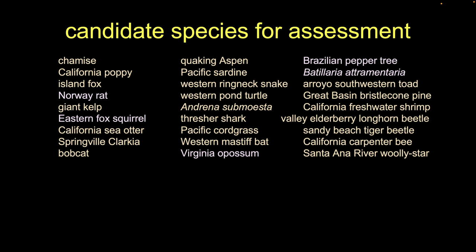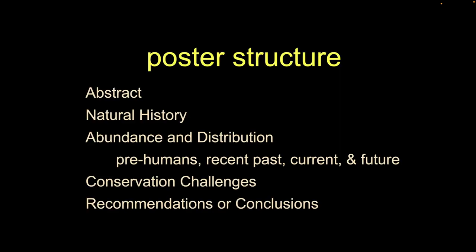If you want to choose your own species, come talk to me — I prefer you pick one from this list if you can, but you can always propose something. Now let me go over the poster structure. You do have freedom and don't have to stay exactly to these sections, but you have to have at least this content. An abstract will be a brief one-paragraph summary of your species. Then natural history — how much you give us depends on your particular critter and what's critical to understanding its management.